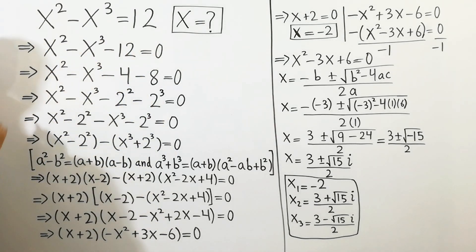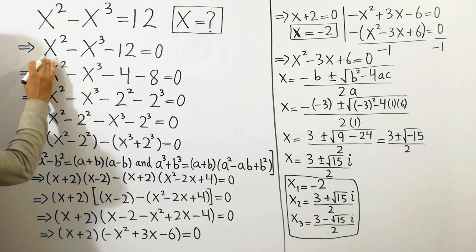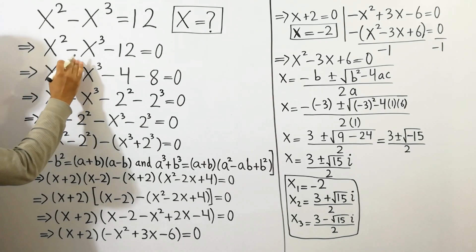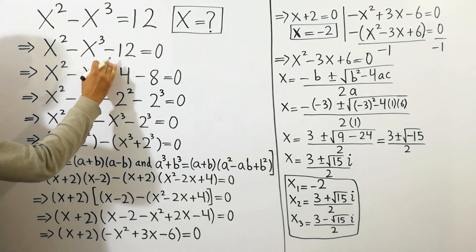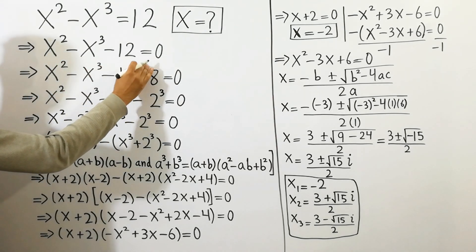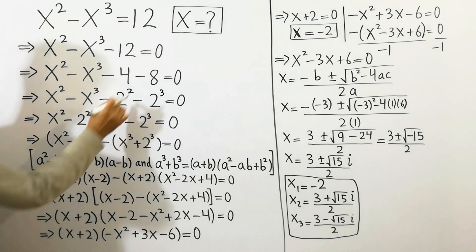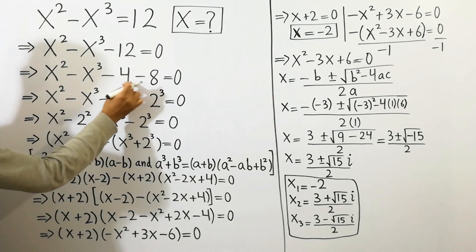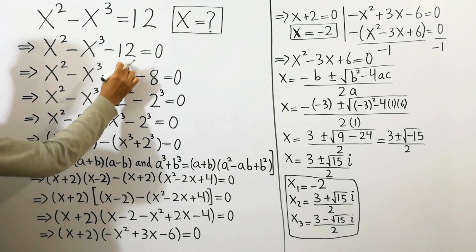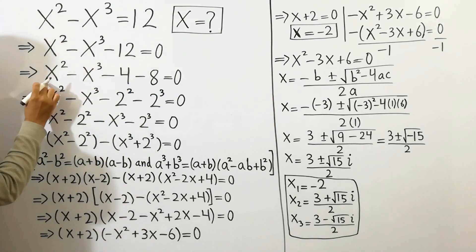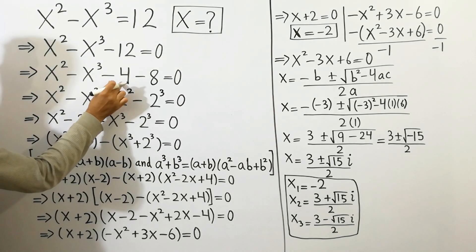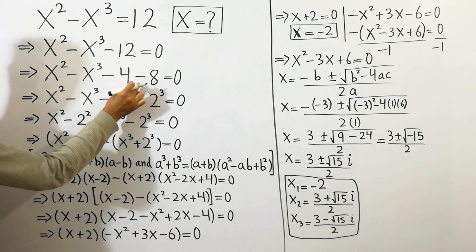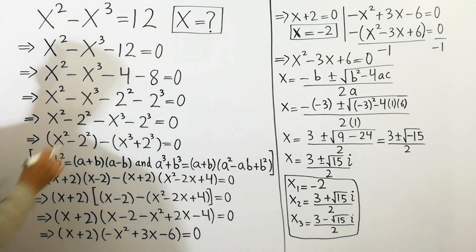We can write it as x squared minus x cubed minus 12 is equal to 0. As we know that 8 plus 4 is equal to 12, so we can write here x squared minus x cubed minus 4 minus 8 is equal to 0.